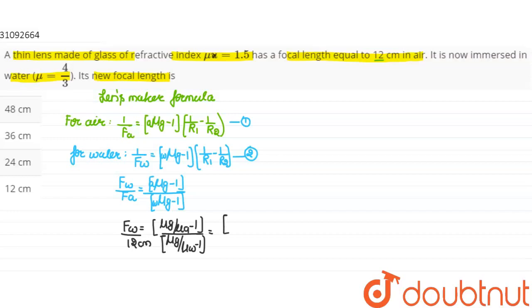So how much is mu of glass? 1.5 minus 1, and then it will be 1.5 divided by mu of water, which is 4/3, minus 1.